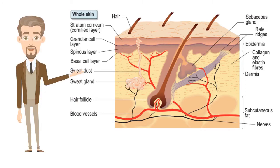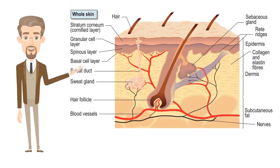The hypodermis is the subcutaneous layer lying below the dermis. It consists largely of fat. It provides the main structural support for the skin, as well as insulating the body from cold and aiding shock absorption. It is interlaced with blood vessels and nerves.